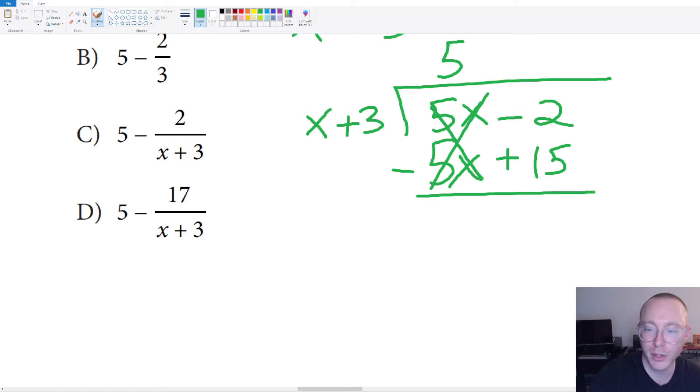Five X minus five X will cancel out. Then we have negative two minus positive 15. Remember that if we subtract a positive, we're really just subtracting. And so it's negative two minus 15. That would be negative 17.